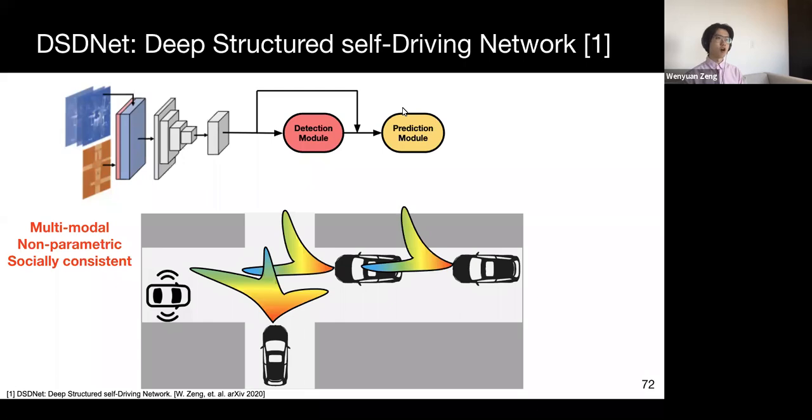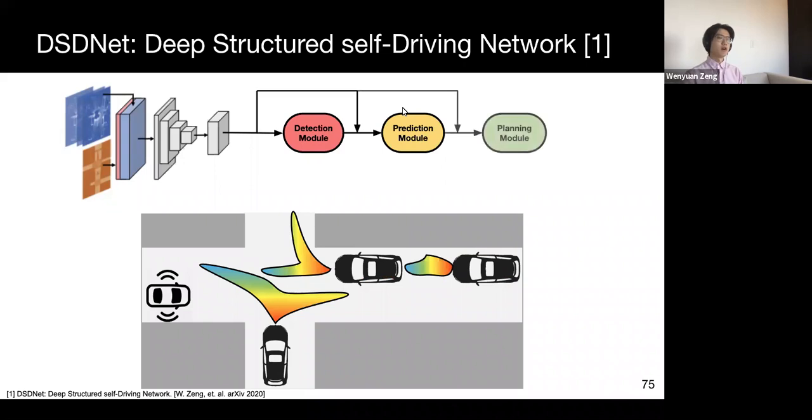Although we can do this for all actors, we can see here that the results are not socially consistent. For example, two distributions may overlap, meaning two cars will collide with each other, which is not realistic. And to tackle this, we propose to conduct message passing between all actors and encode their socially consistent interactions within pairwise energy. This gives us multimodal socially consistent prediction. And finally, our model plans a safe trajectory with a cost minimization procedure, which ensures the produced planning will have minimal expected collision rate as suits the current scenario.